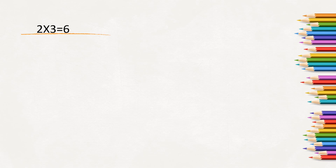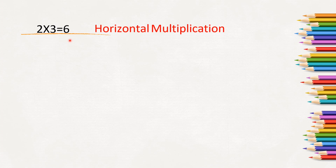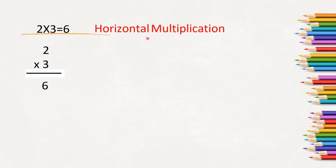We can write multiplication in two ways. This is called horizontal multiplication, where we write the numbers horizontally. And this is called vertical multiplication, where we write the numbers vertically and multiply. Here we have written 2 three times is 6 horizontally. And again, 3 two times is 6 written vertically.